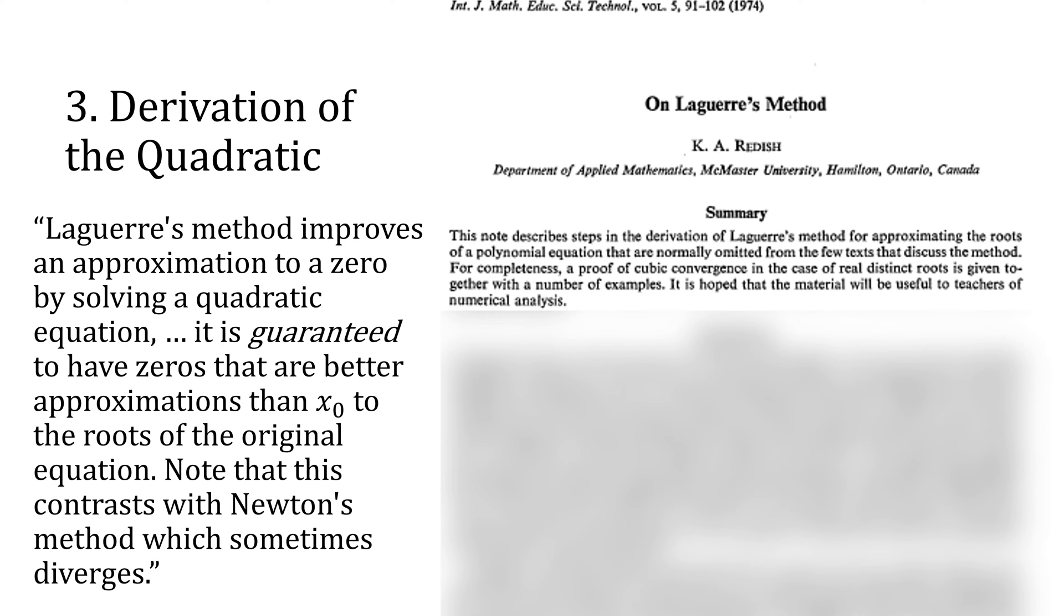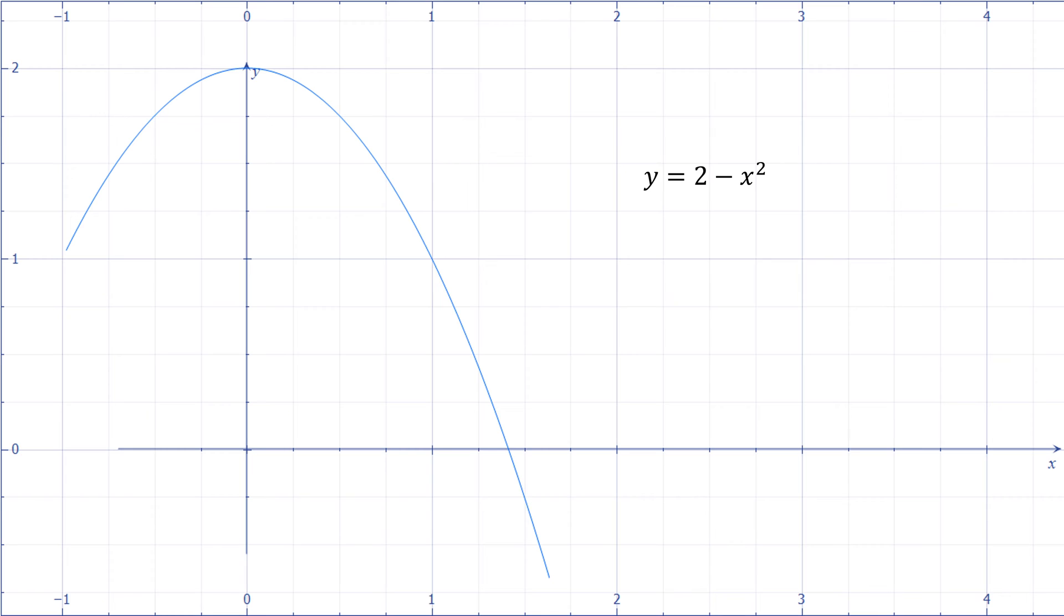Let's look at a few examples. We'll use the polynomial 2 minus x squared. Given a point for Newton's method, we draw the tangent line to pick our next value for x. With Laguerre, we use the second derivative information to essentially solve a quadratic, and for polynomials of degree 2, Laguerre's method will always find a root after one iteration. Let's look at a more interesting example.